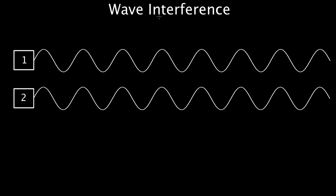If two waves overlap in the same medium, we say that there's wave interference. This box here could represent a speaker and this could be the sound wave it generates, or it could represent a laser and this would be the light wave it generates, or it could be some sort of ripple tank generator and this is the water wave it generates. If you had a second source of a wave and these were to overlap, you'd cause wave interference.